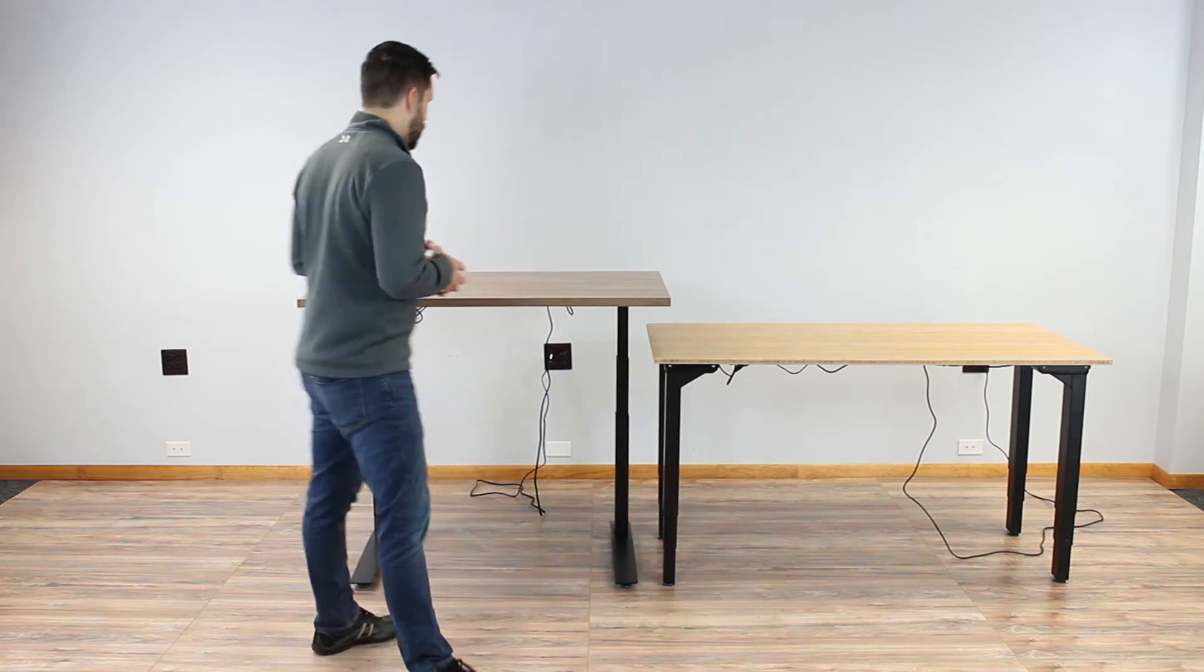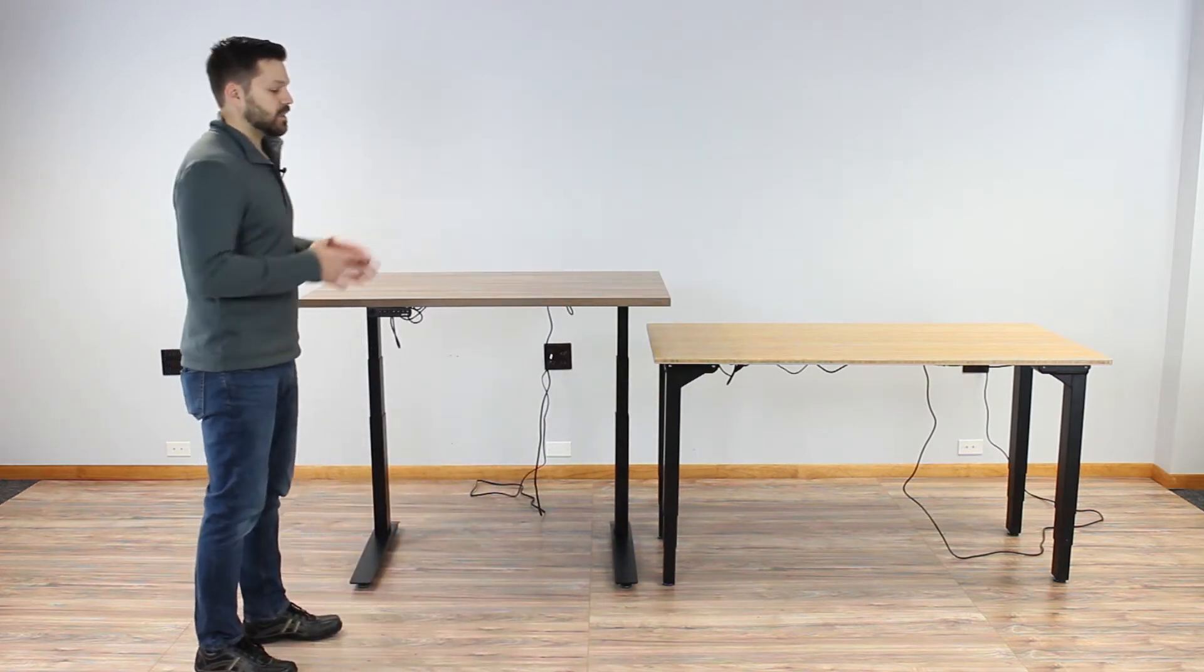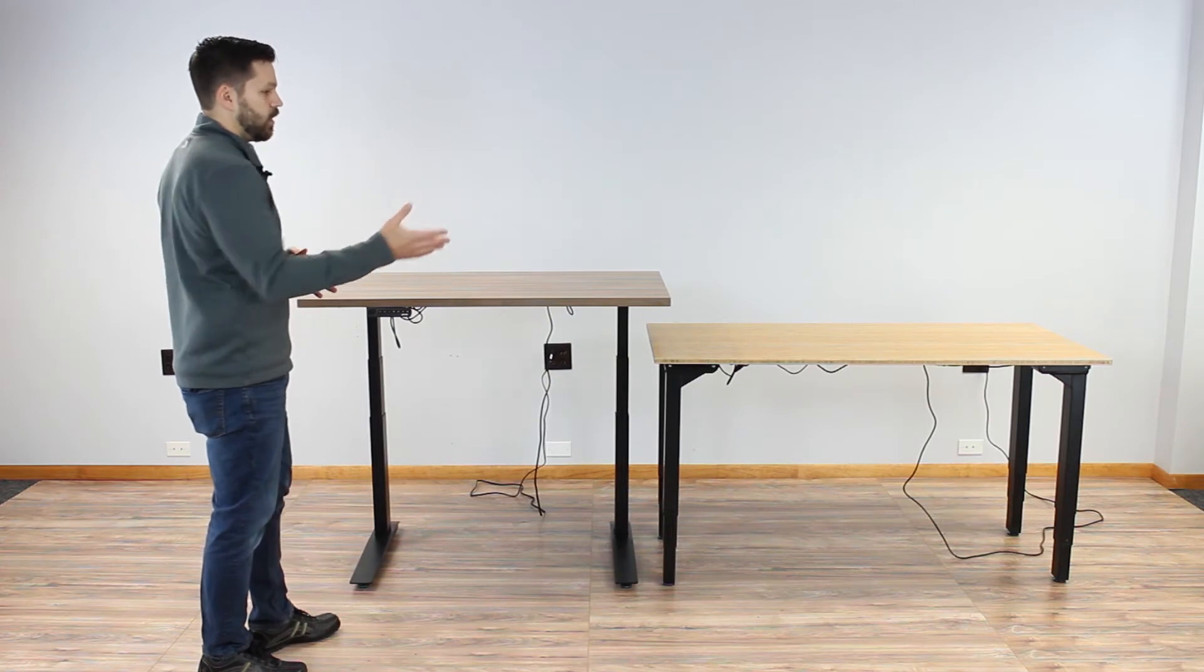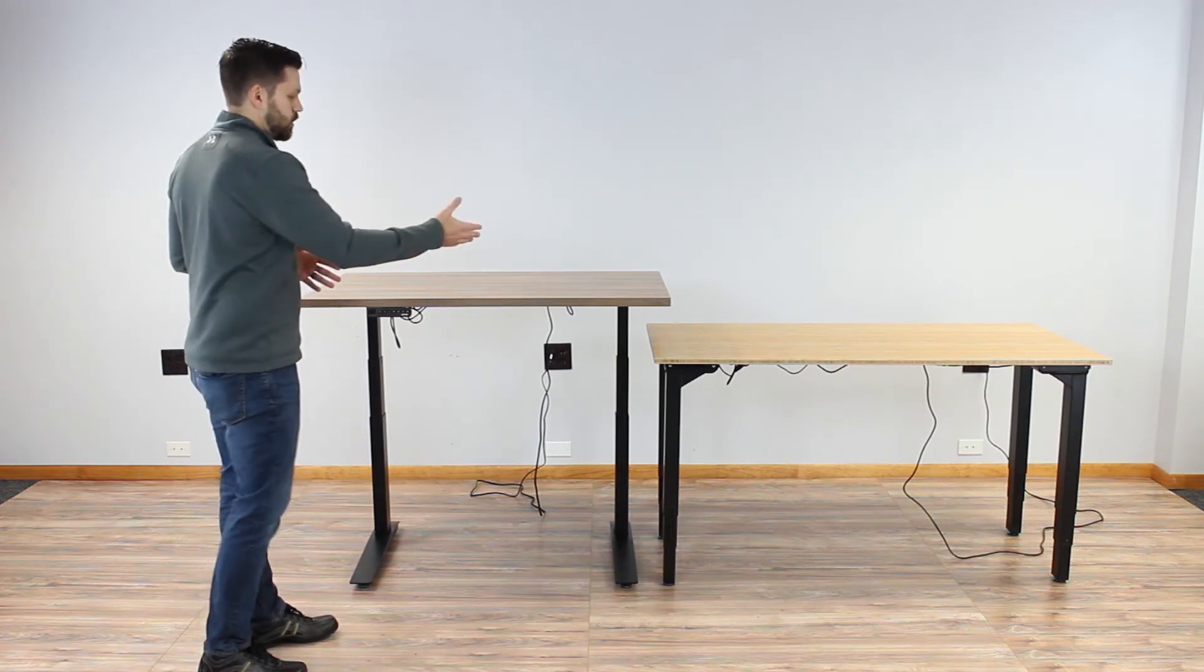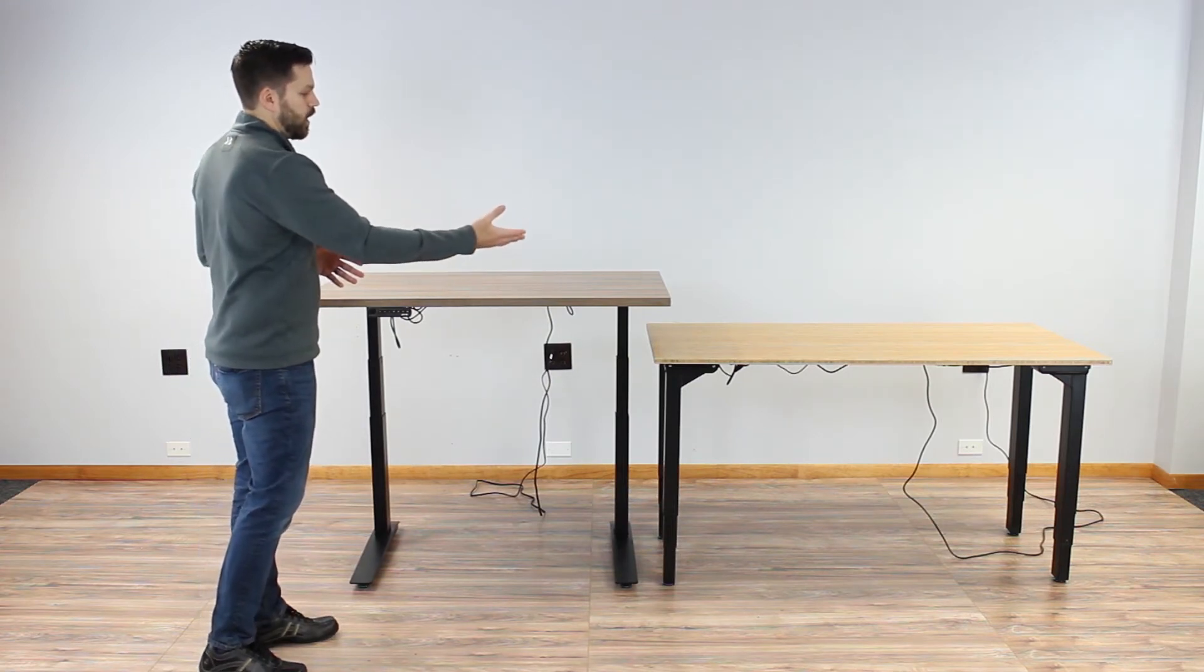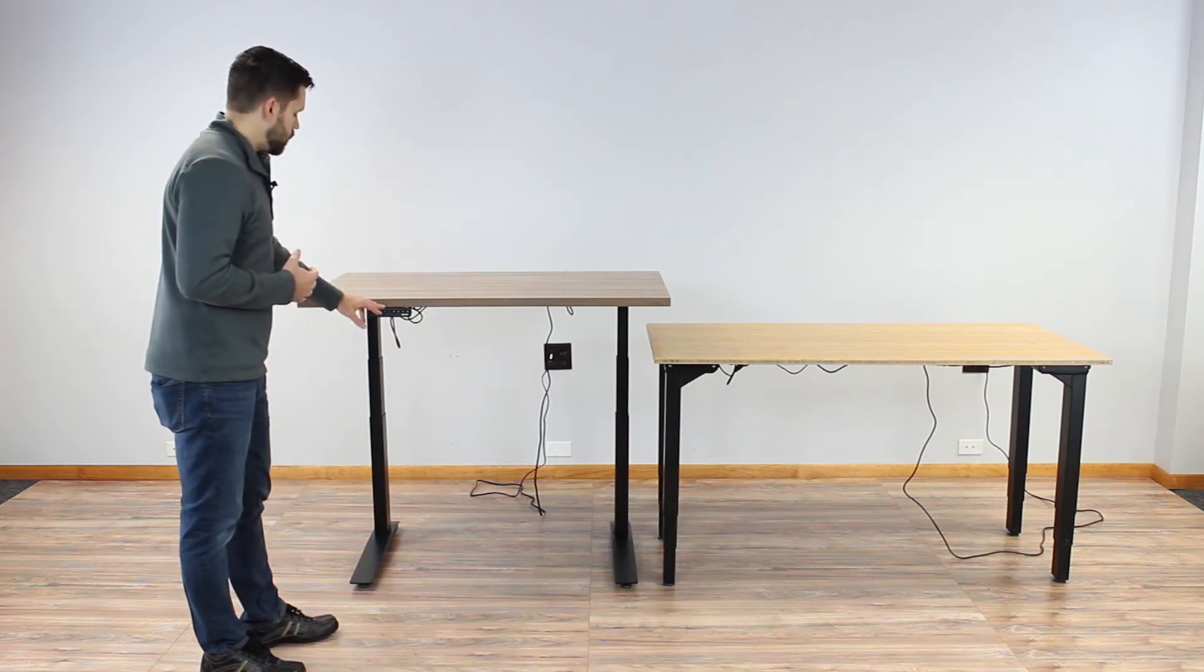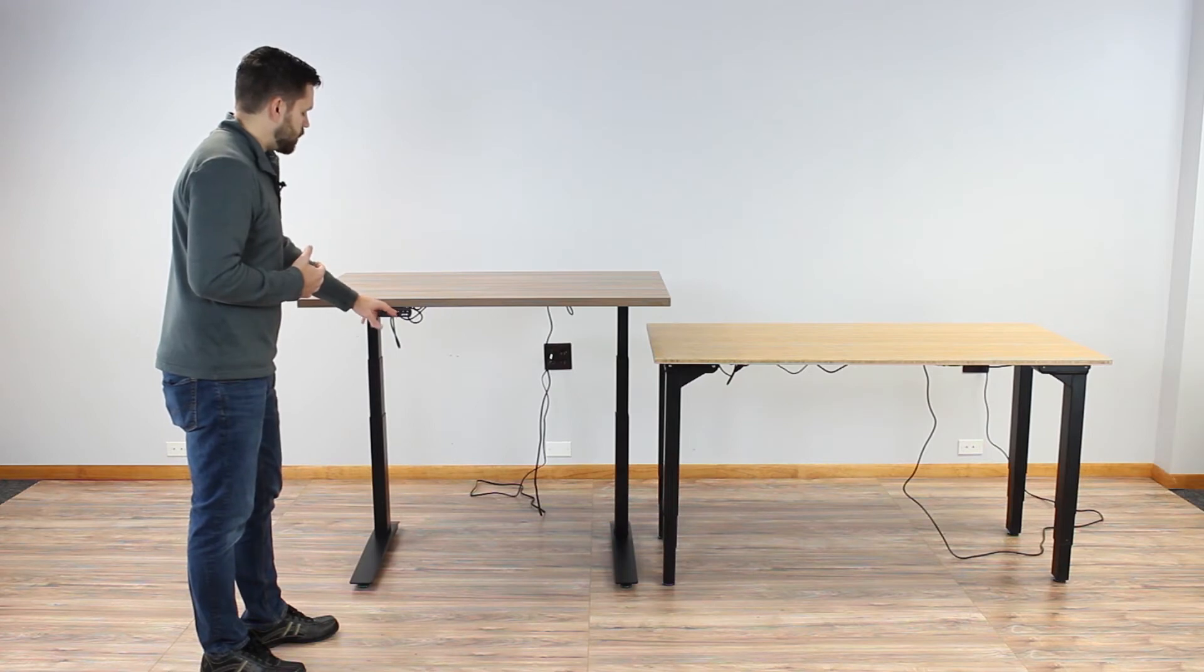So first thing I'm going to do is I'm going to show you what it looks like as it's intended to be used from the manufacturer. And that's an anti-collision for a hard object. So we have the Fully Jarvis and we have the Uplift 900 four leg configuration over here. So I have it preset. So we'll go ahead and press two.